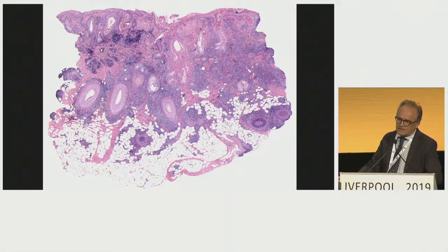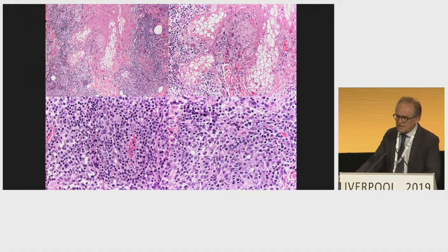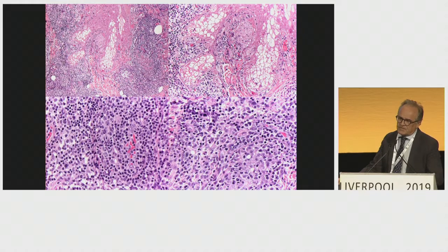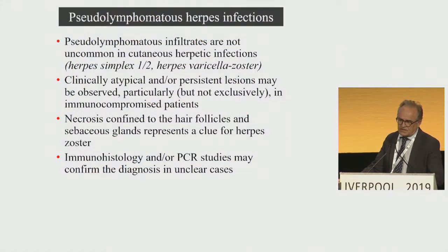This is one of the cases involving the scalp — the so-called verrucous herpes. It's very difficult to suspect herpes because if you look for cytopathic features such as multinucleated giant cells or ground-glass appearance of the nuclei, there is nothing in the epidermis. But if you pay attention to the hair follicles and sebaceous glands, it is very characteristic. You see necrosis of the infundibulum and sebaceous gland with dyskeratotic cells — highly suggestive of varicella zoster. When you examine the infiltrate around these necrotic hair follicles and sebaceous glands, you see pleomorphic, hyperchromatic, very large cells. When you stain for CD30, most of them are positive.